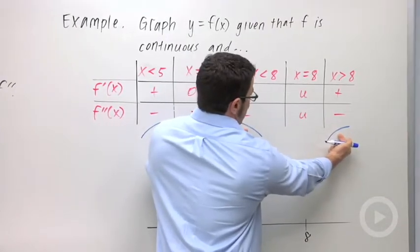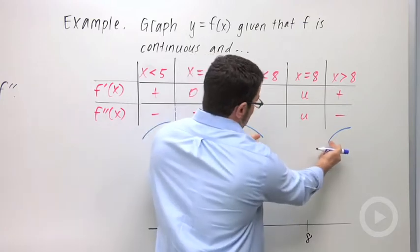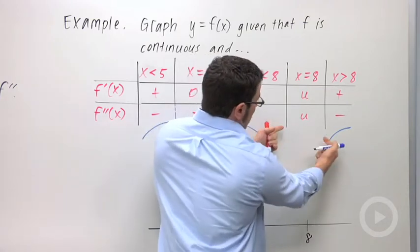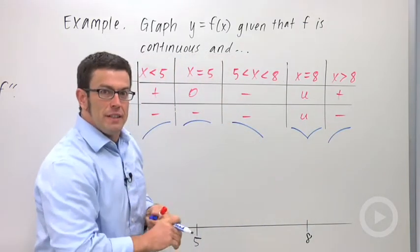Now, when I piece these two things together for x equals 8, I'm going to get the only thing I can get really is some kind of corner or cusp like so. So that's how the pieces are going to fit together.